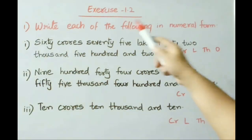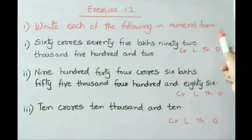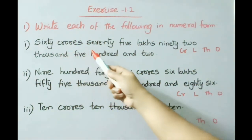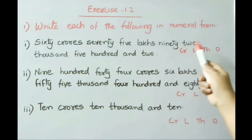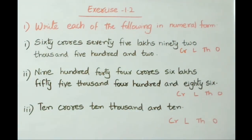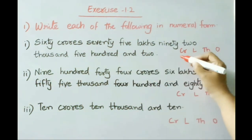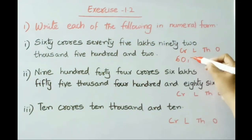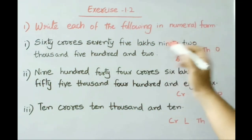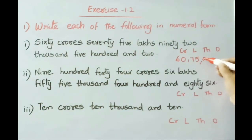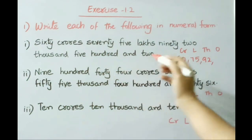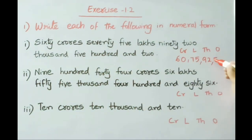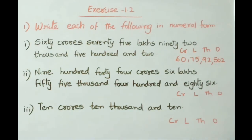See now Exercise 1.2, first sum: write each of the following in numeral form. See the first one: 60 crores, 75 lakhs, 92,502. Under the crores period write 60, under lakhs period write 75, under thousands write 92, under ones period write 502. So the number is 60,75,92,502.